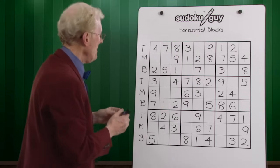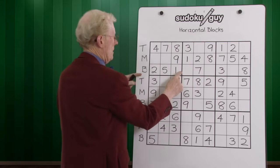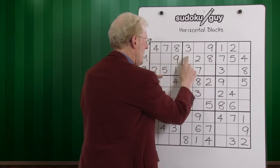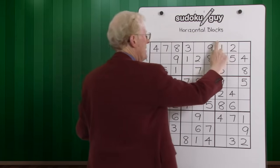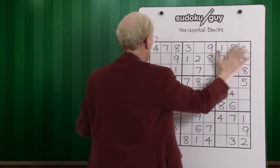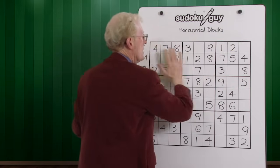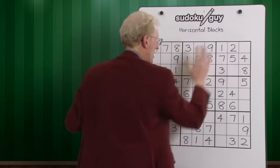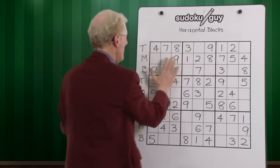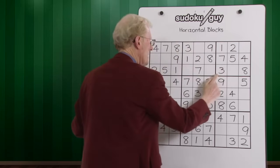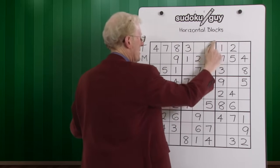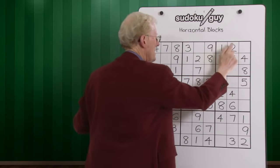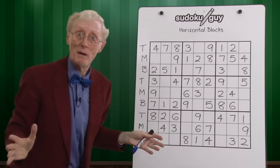Let's take number one. In this block, one is in the bottom row. In this block, one is in the middle row. And in the third block along, there's a one there. So the ones are already in our three horizontal blocks — we don't have to worry about them. Let's go to two. In this block, two is in the bottom. In this block, two is in the middle. And in this block, two is already there in the top. So we have a bottom, a middle, and a top — that was easy.